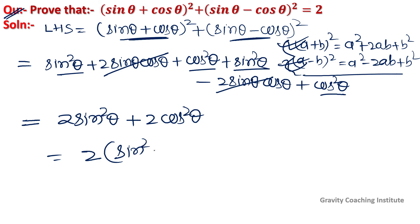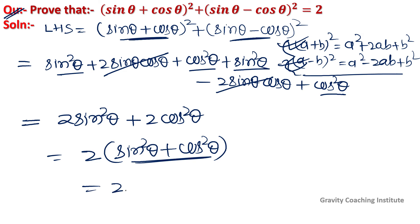Since sin²θ + cos²θ = 1, we get 2 × 1 = 2 = RHS. Hence proved.